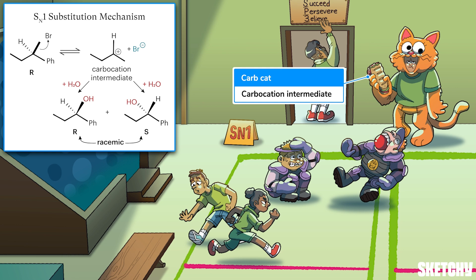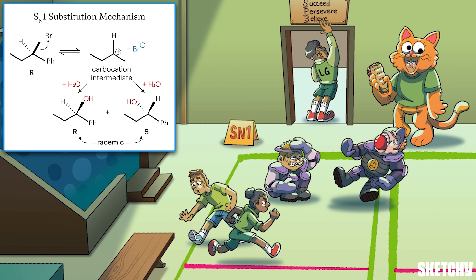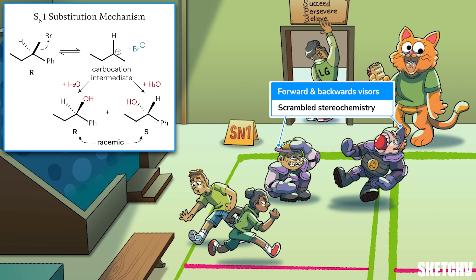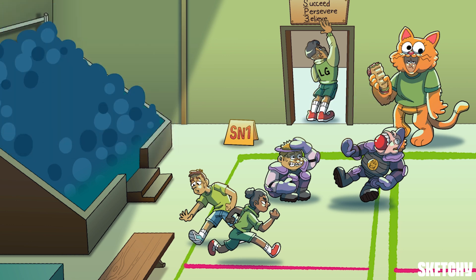The SN1 reaction proceeds through a carbocation intermediate, symbolized here by a baguette-toting, carbo-loading cat mascot — carbos and cats in the same symbol for carbocation. The carbocation intermediate means that any chiral centers that undergo substitution by an SN1 mechanism end up scrambled, with a mixture of R and S configurations in the product. That's why team SN1's visors are a mixture of forwards and backwards. It's also worthwhile to note that substrates in SN1 reactions can undergo rearrangements, because carbocations are quite prone to rearranging.